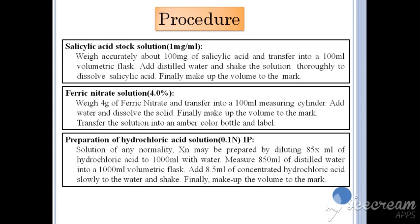The second step involves forming a 4% solution of ferric nitrate. Weigh 4 grams of ferric nitrate and transfer it into a 100 ml measuring cylinder. Add water and dissolve the solid, then make up the volume to the mark. Transfer the solution into an amber colored bottle and label it, as this solution is light sensitive.